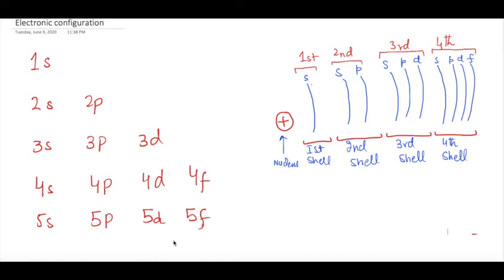Have a look at this diagram on your right hand side. This is the nucleus and this is the first shell. In the first shell only the S subshell is present. In the second shell, 2 subshells — S and P — are present.